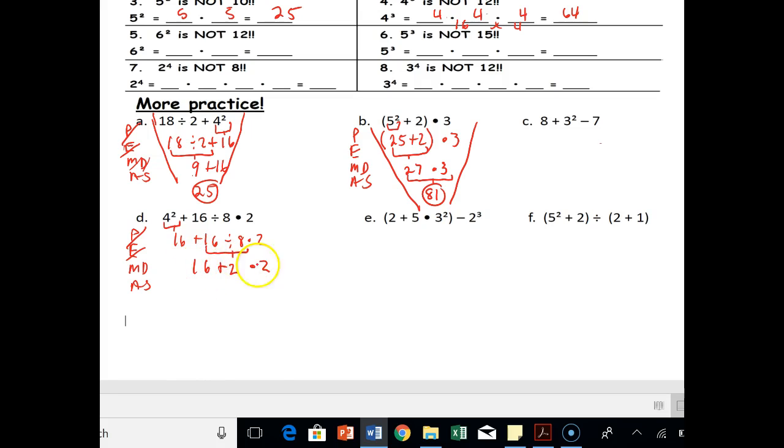It's going to be tempting to do the 16 plus 2 and then times 2, but remember, I've got to do all my multiplication and division before I add. So 2 times 2 is 4, so 16 plus 4. Now I'm left with just addition or subtraction. All I've got is addition, and that's 20. So again, it makes my nice little V.